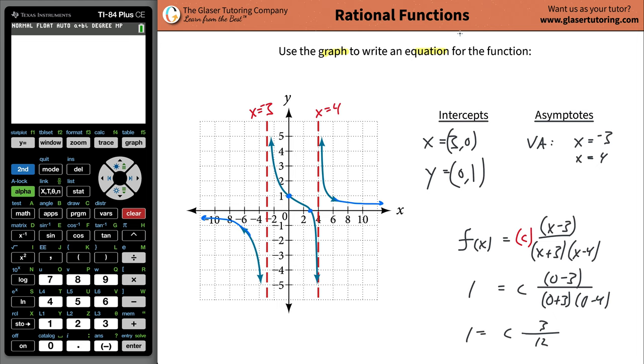And then to solve for c, you can multiply the right hand side by the reciprocal of that fraction 12 over three. That causes the whole right side to go away. And then you would do the same thing because whatever you do to the right, you got to do to the left. So 12 over three is simply going to be four. Four times one is obviously four. So c is going to be four.